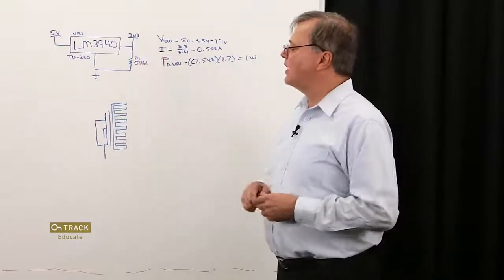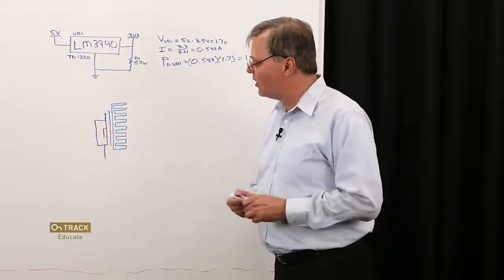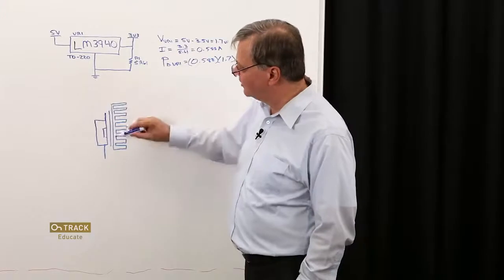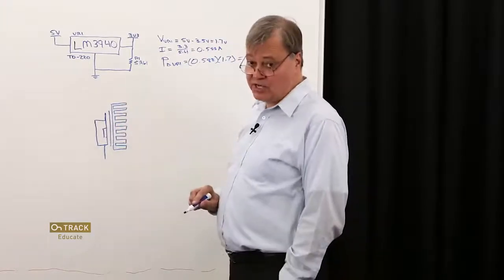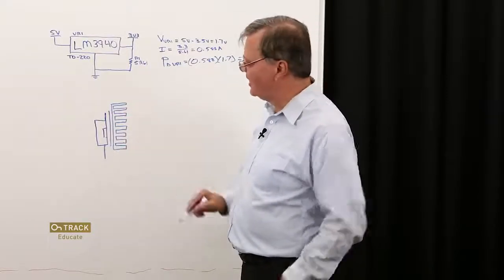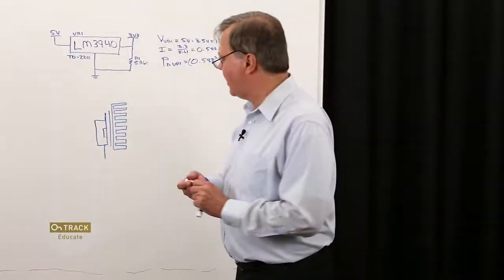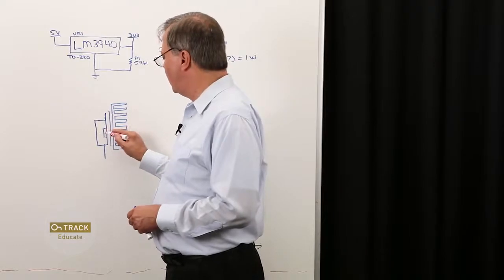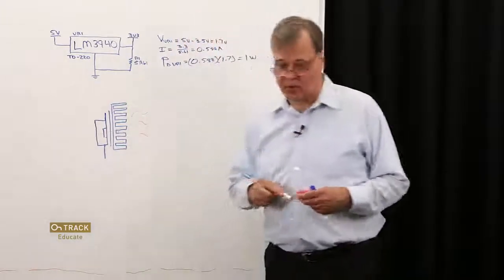Our voltage regulator is in a TO220 package, which I've kind of drawn here. So, this represents the junction of our semiconductor, and this is the back metal surface of our TO220 package. Then, we have a thermal interface material and a heat sink. The heat generated by our voltage regulator is basically going to flow in this direction and then be dissipated to our ambient environment.